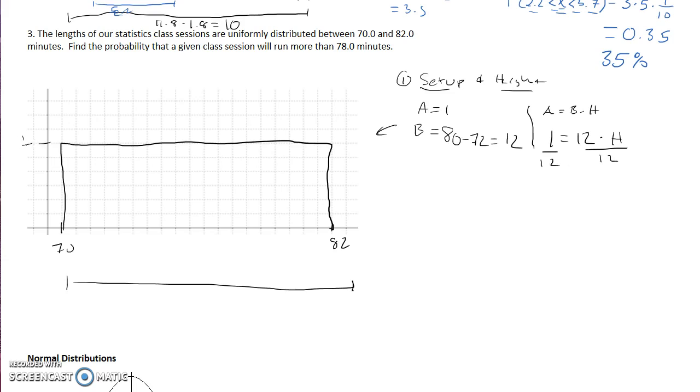To get the height we divide both sides by 12. Again, I'm going to leave this as a fraction. We find that height is 1 over 12. That's our first step is to find that height.